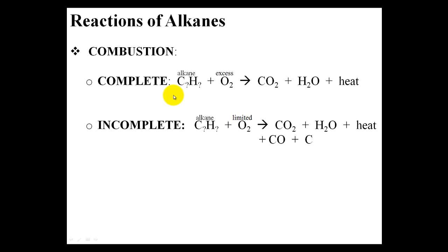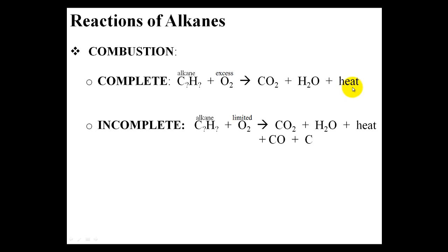The first reaction type we'll look at is the combustion of alkanes. There are two types: complete combustion and incomplete combustion. It doesn't matter what type of alkane you have — it could be C2H6 or C22H46. As long as it's an alkane reacting with excess oxygen, you will produce carbon dioxide gas, water, and heat. So this reaction is exothermic.